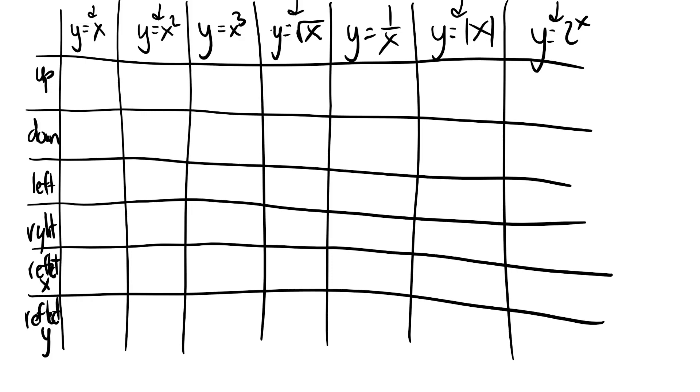So if you remember, when we go up and down, we do it on the outside of the parentheses, away from the x. So for linear, it's really easy. y equals x plus 3 is up, y equals x minus 3 is down.